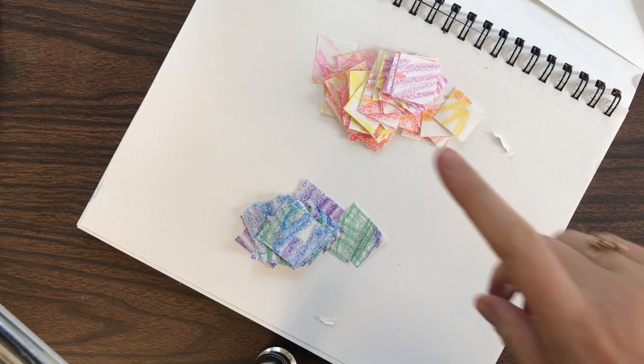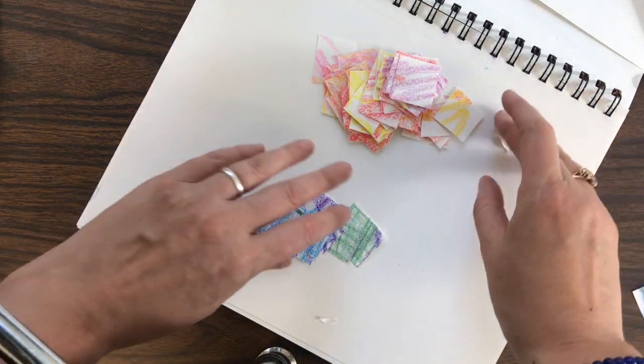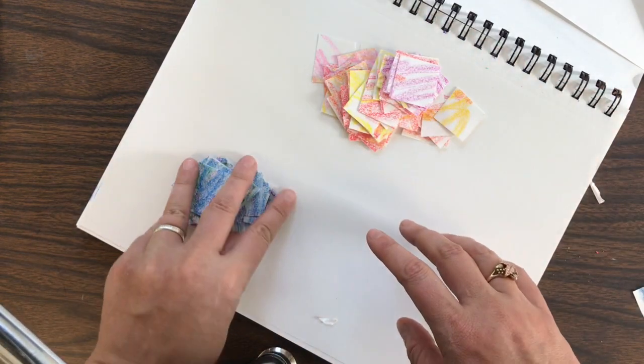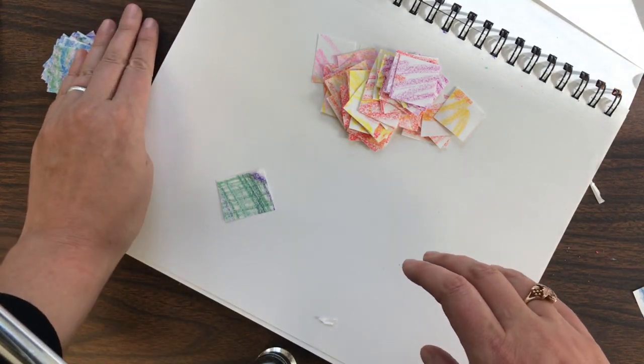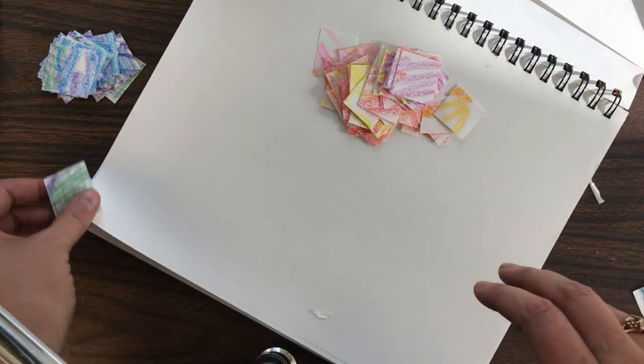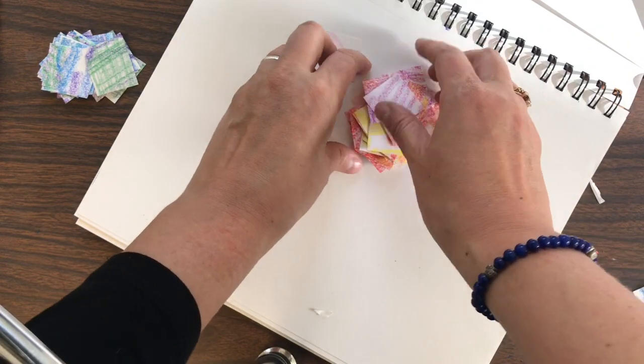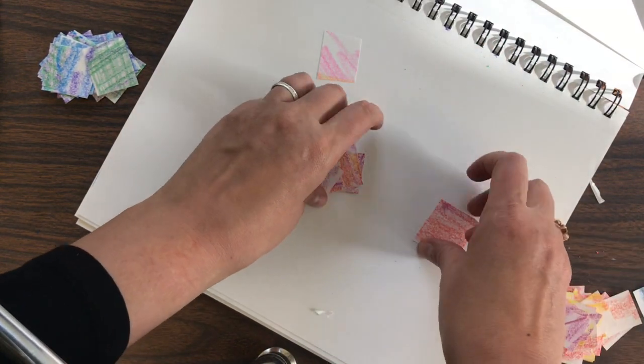And there you have it. I have my squares of cool colors and my squares of warm colors. I'm going to put them here. You can see them. Right here. And now we are going to design our mosaic.